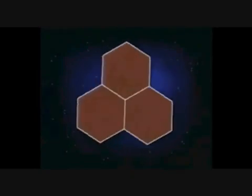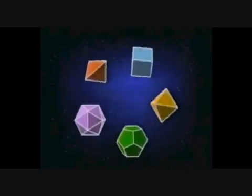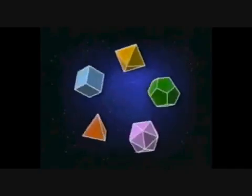Three regular hexagons coming together at a vertex lie flat, so no more solids can be made with just hexagonal faces. Regular polygons with more than six sides won't fit around a vertex at all. So, there are exactly five Platonic solids.